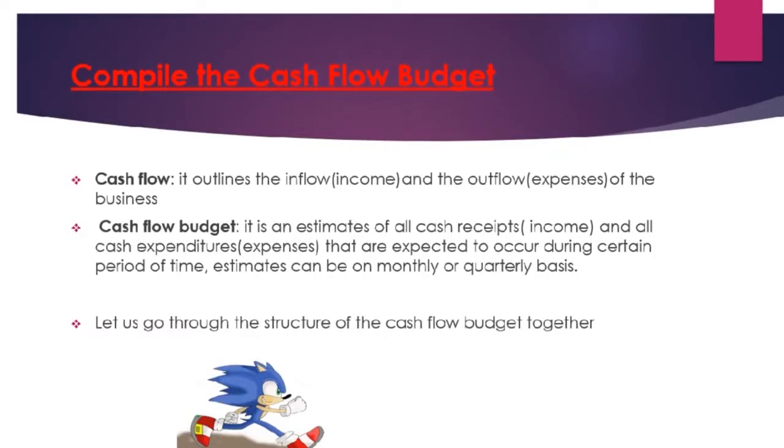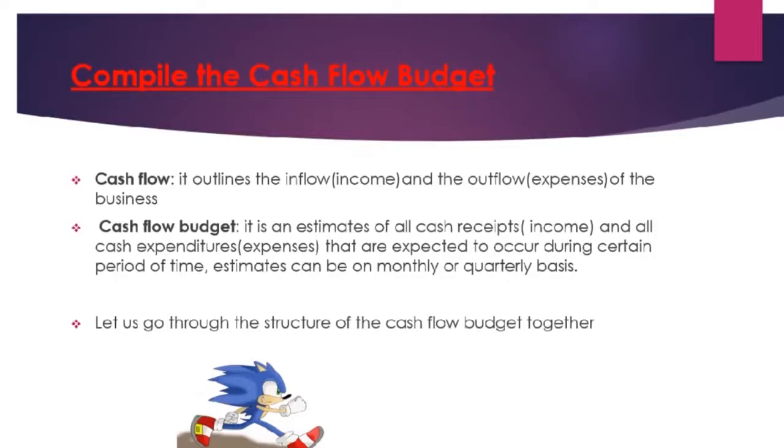Now we are done with the different types of costs or expenses. We are going to move on to the cash flow budget. When we talk about cash flow, we are talking about the inflow and outflow of cash within the organization — we receive money and we make payments, meaning income and expenses. A cash flow budget is an estimation of all the cash receipts, which is the income, and all the expenses that are expected to occur during a certain period of time.